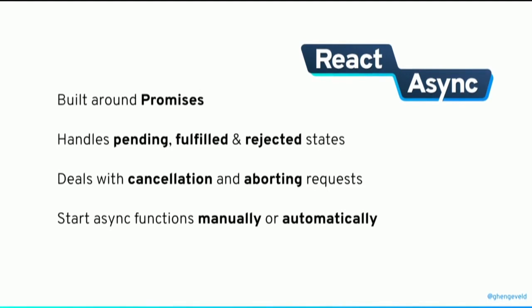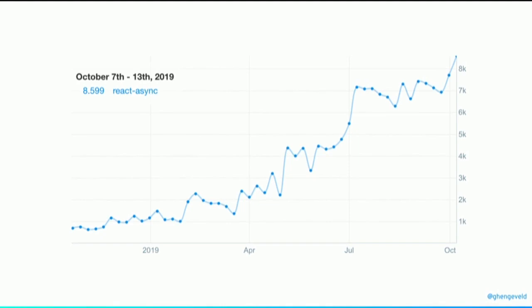If you trigger multiple promises in quick succession - so you have a button and every time you click it an HTTP request fires off - you'll probably want to cancel the previous ones and abort the underlying HTTP request to avoid race conditions. That's one of the things that React Async handles for you out of the box. And you can have it start doing an HTTP request when a component renders, or handle user interactions like submitting a form.